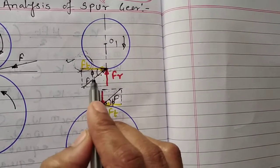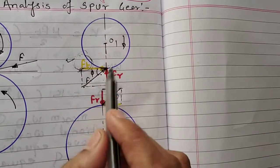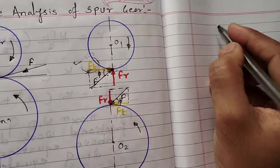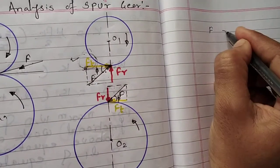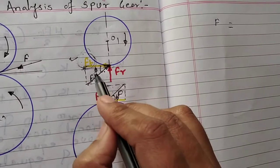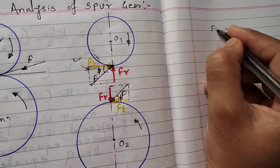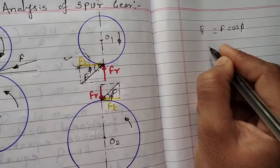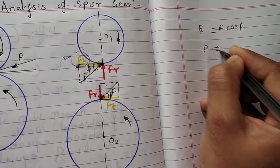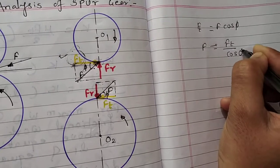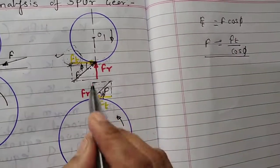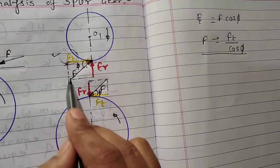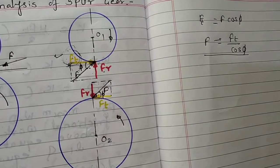After calculation of Ft, let's calculate FR and F. Now see here we get a right angle triangle and here we have F. F is the normal force, in terms of Ft. It is the adjacent side, so we can write Ft = F cos φ, so F = Ft/cos φ.